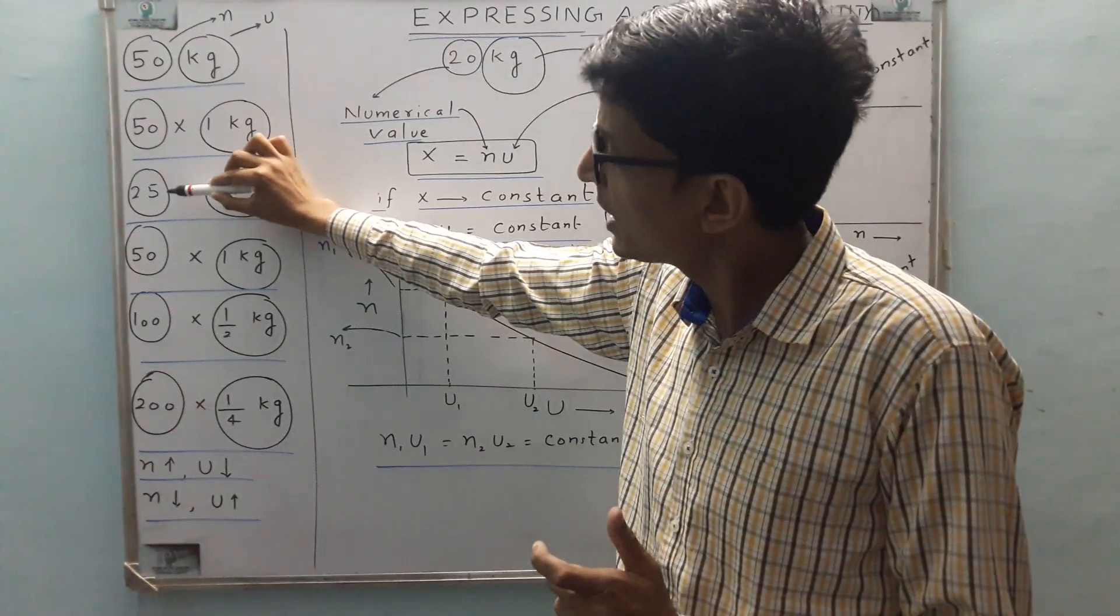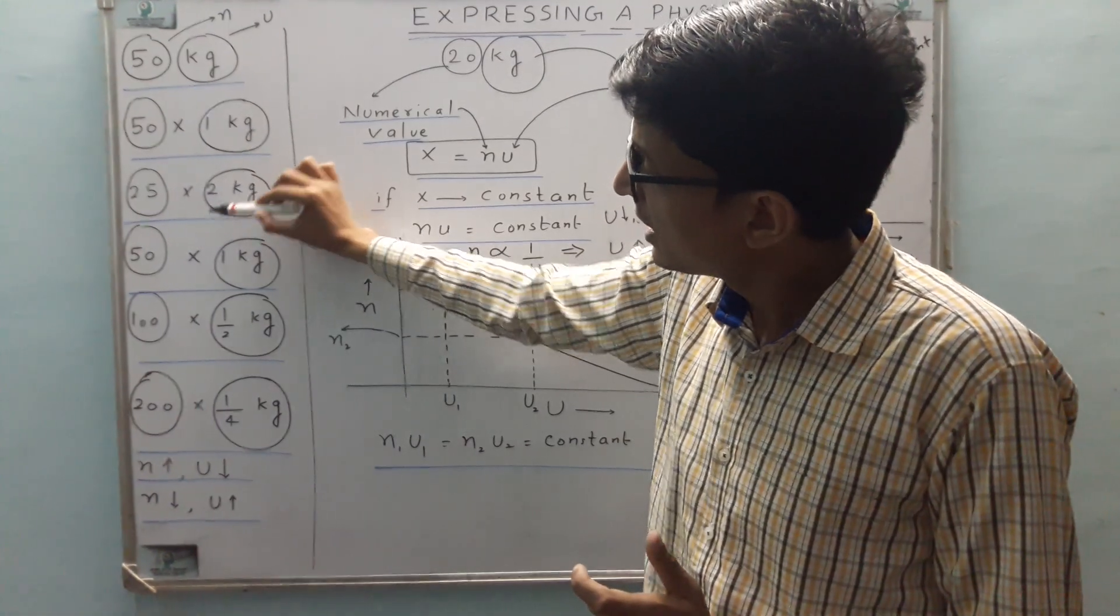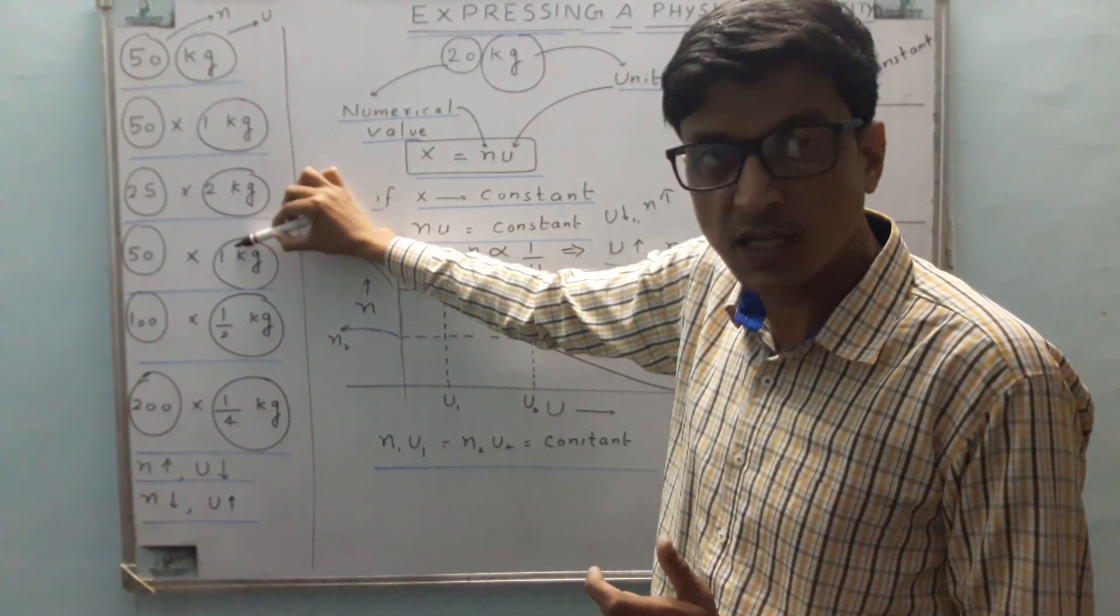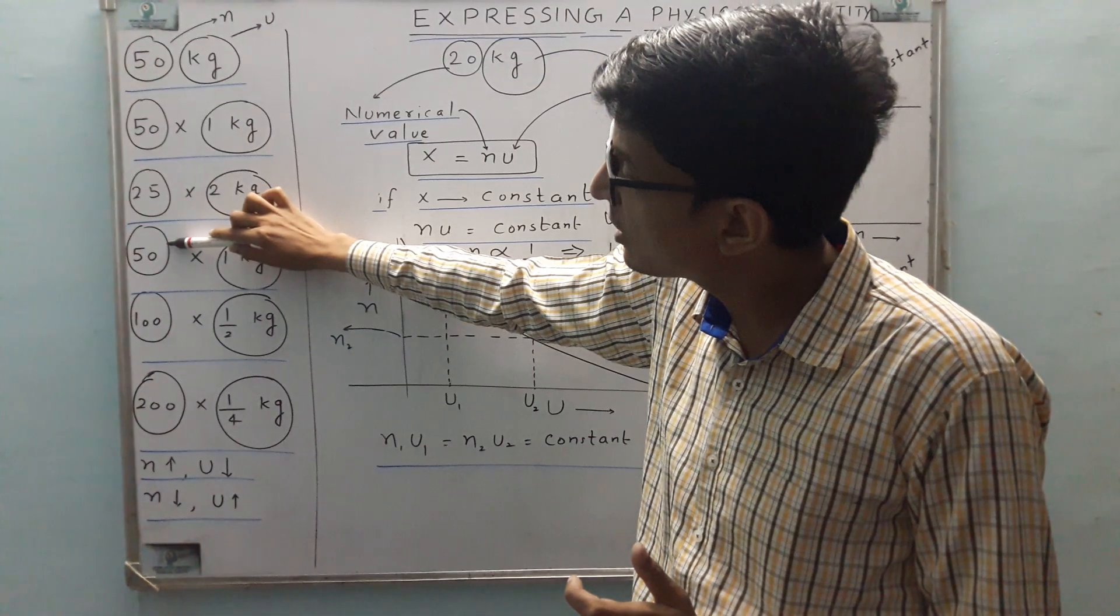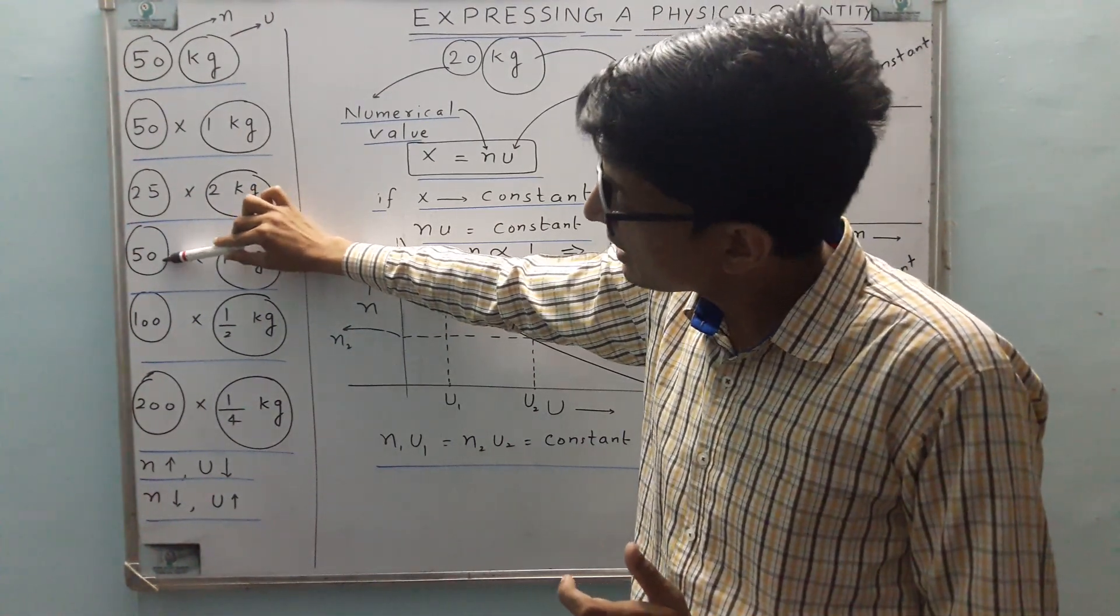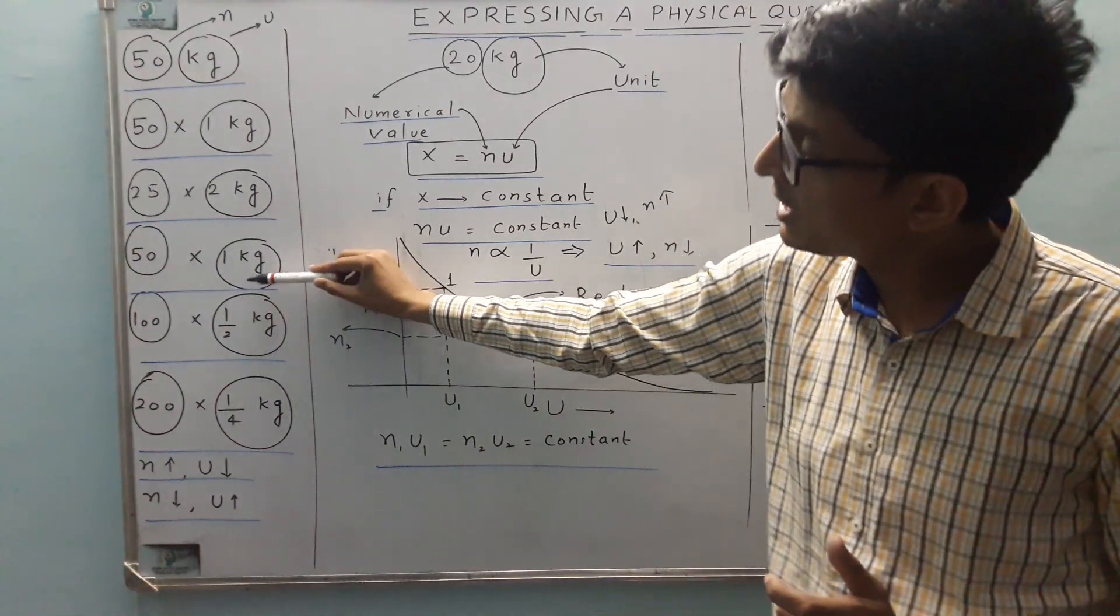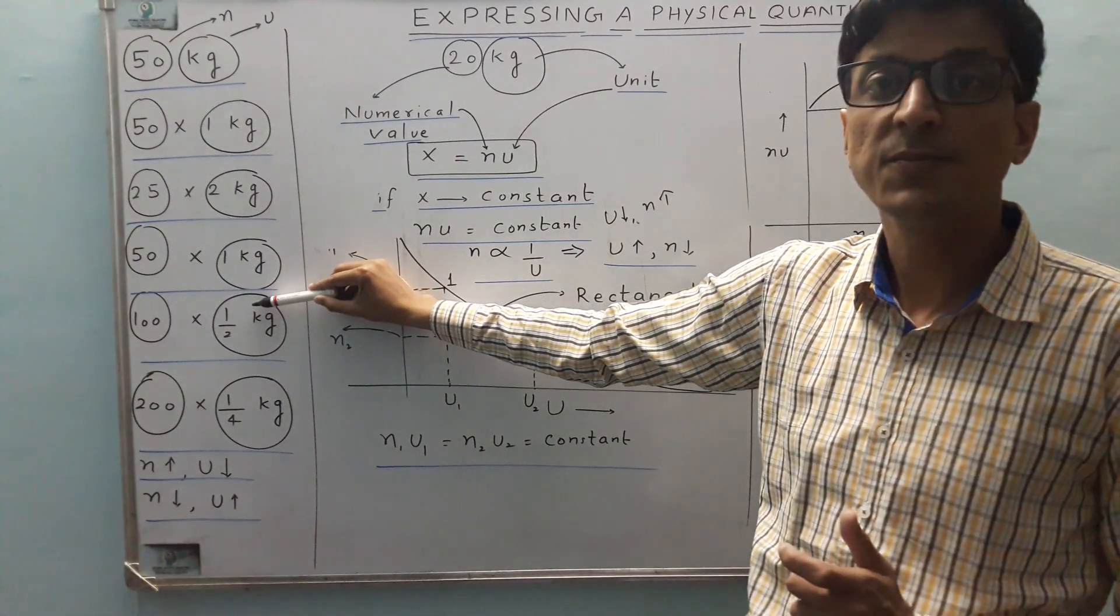Now if I increase that again, then if I increase the unit, so if I decrease the unit then numerical value increases. Whereas if I increase the numerical value, unit decreases. Or equivalently, if I decrease the unit, then numerical value increases.